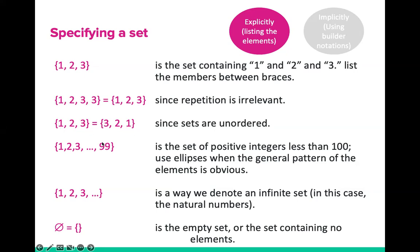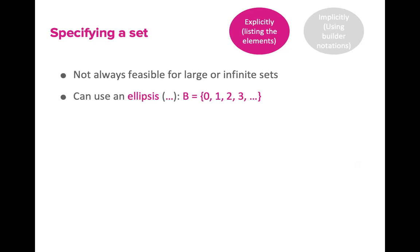We can also specify large sets using an ellipsis to shorten the notation. For example, 1, 2, 3, … 99 represents the set of positive integers less than 100. We use ellipsis when the general pattern of elements is obvious. On the other hand, 1, 2, 3, … followed by an ellipsis denotes an infinite set — in this case, the set of natural numbers. An empty set, or a set containing no elements, is also a notation we will encounter. When using explicit definition for large or infinite sets, it may not be feasible, so we use ellipsis.